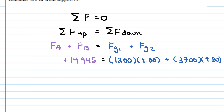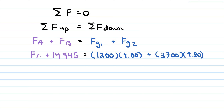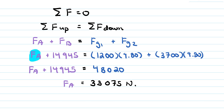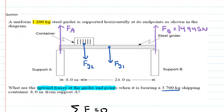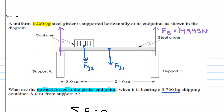Solving the linear equation for FA, the force at support A is 33,075 Newtons. Going back to the diagram, force A = 33,075 N and force B = 14,945 N. This confirms that the upward forces equal the downward forces, completing both the rotational and translational equilibrium analysis for this problem.